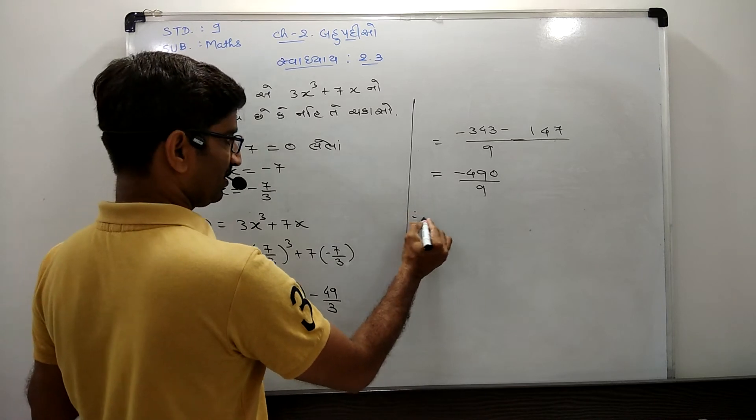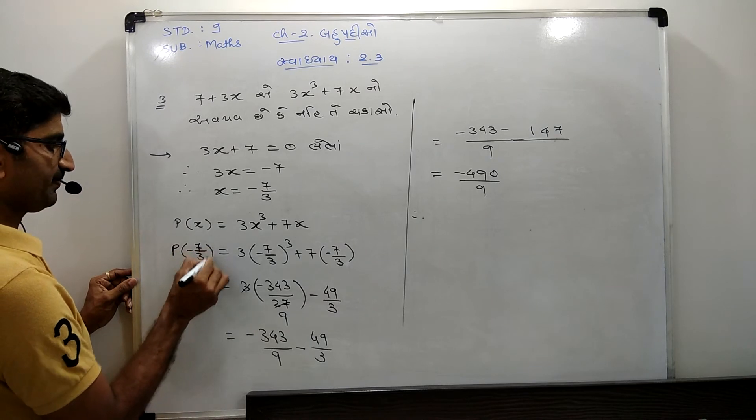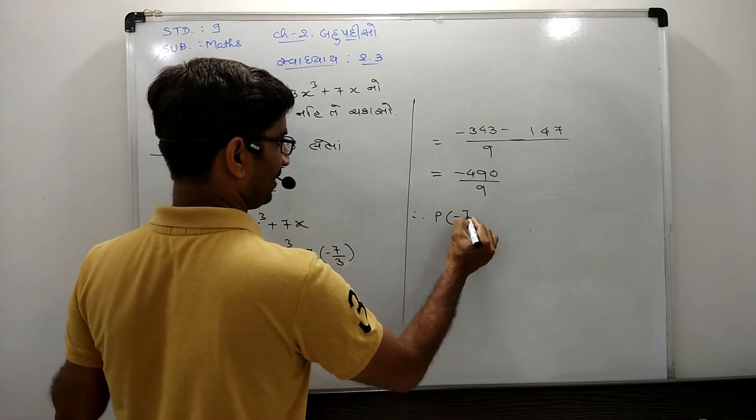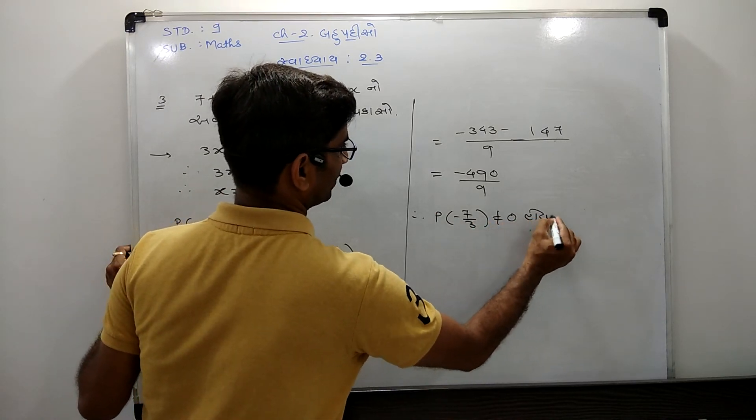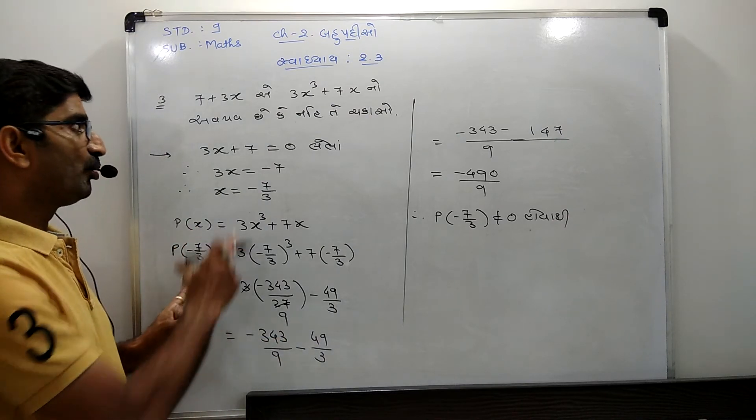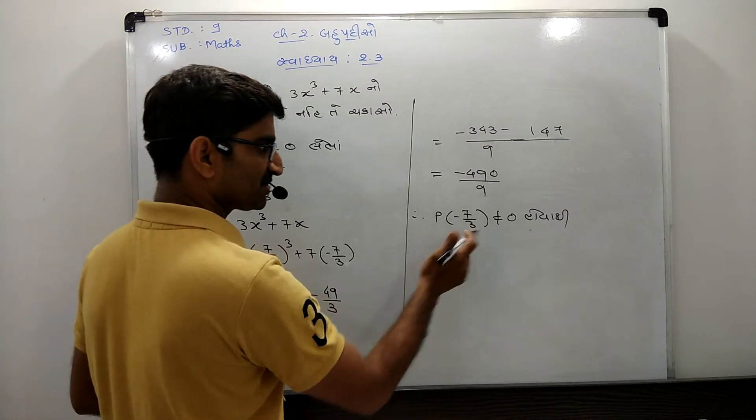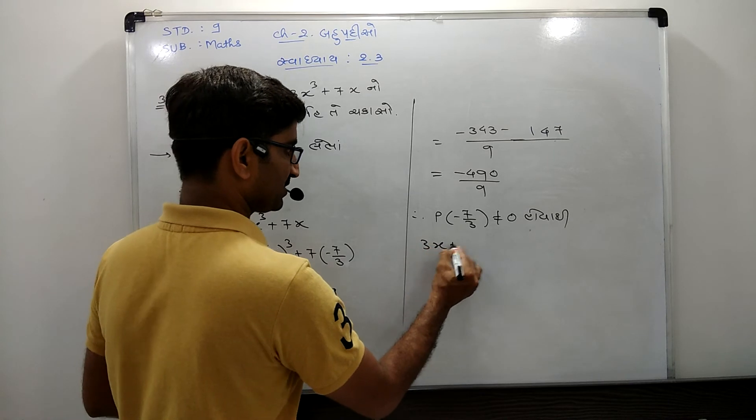So here we can have p of minus 7 upon 3. Here p of minus 7 upon 3 not equal to 0. Here p of minus 7 upon 3, we can have p of x equals 3x plus 7 upon 3. This is not equal to 0 over 3, so 3x plus 7.